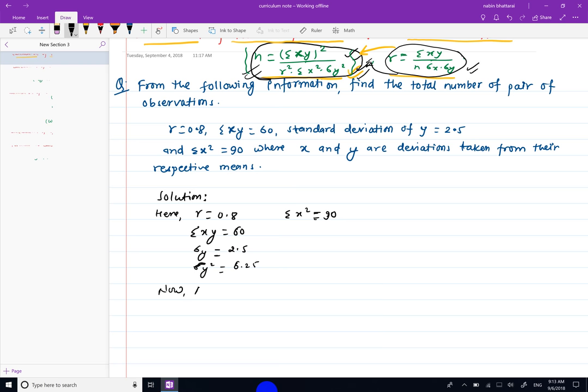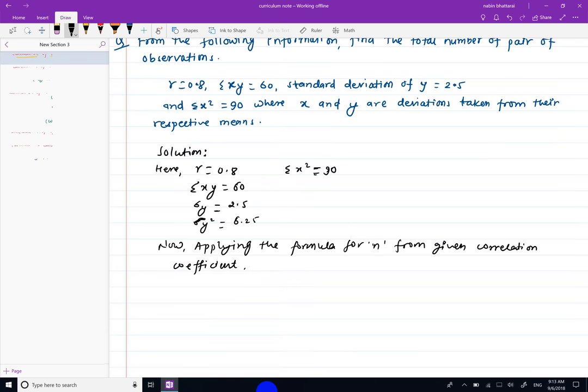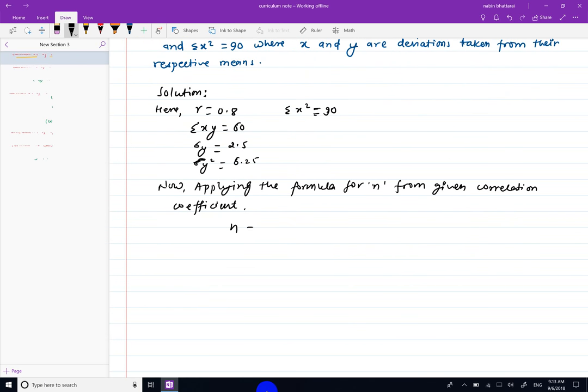Now applying the formula for n from the given correlation coefficient: n is equal to summation xy squared divided by r squared into summation x squared into sigma y squared.